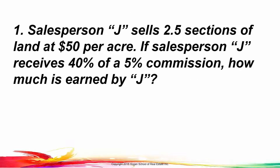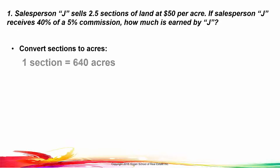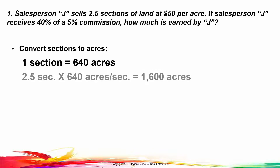Problem one: salesperson J sells two and one half sections of land at $50 per acre. If salesperson J receives 40% of a 5% commission, how much is earned by J? A section of land contains 640 acres — that's a number you have to memorize. Since J sold two and a half sections, we multiply two and a half by 640, giving us 1,600 acres sold.